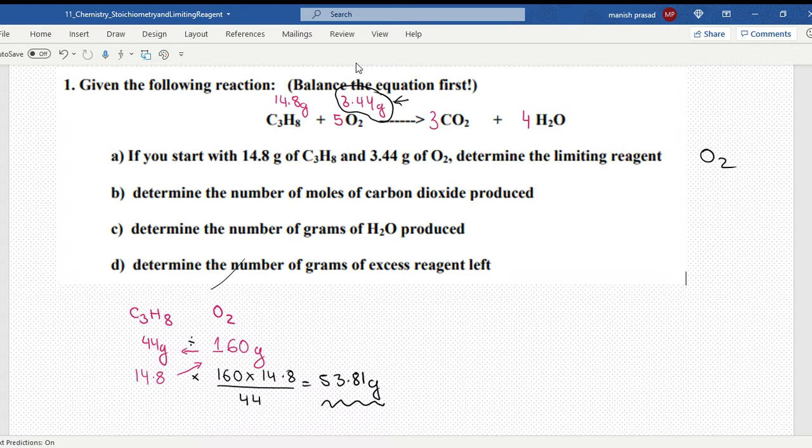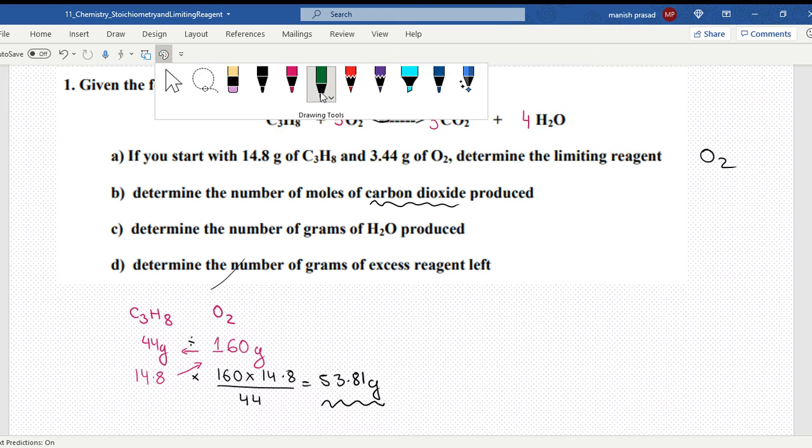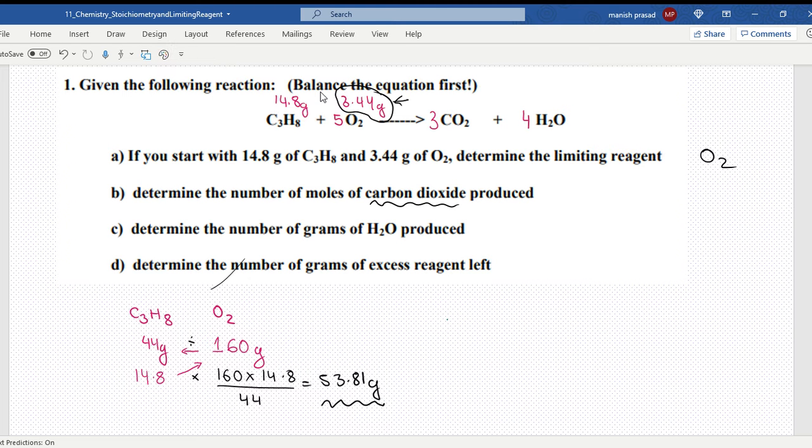Whatever other calculations have to be done have to be done in terms of the limiting reagent. Now they want us to find out carbon dioxide, so let's find out carbon dioxide. Let's look at the question - oxygen is the limiting reagent, carbon dioxide is what we have to find out.